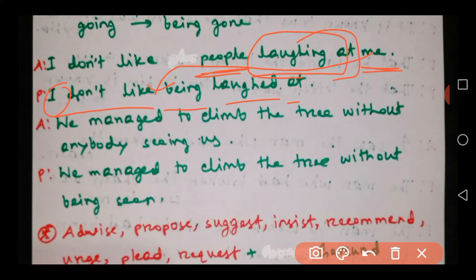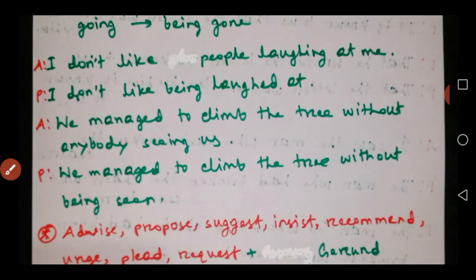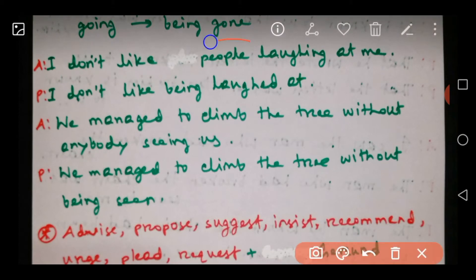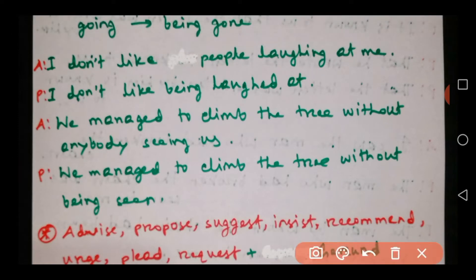Now, 'me' and 'I' are the same person, so we will not use 'me' again. Also, 'people' would normally appear as the object, but when the subject is 'people,' 'somebody,' or 'someone,' we can avoid it. So the sentence becomes: 'I don't like being laughed at.'